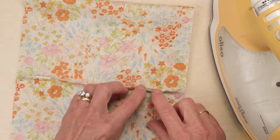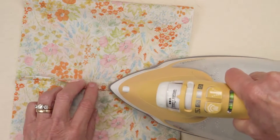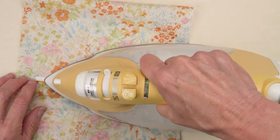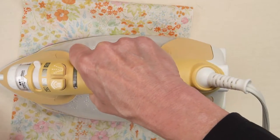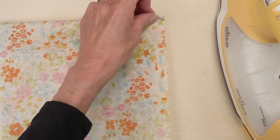Next press the seam allowance open on both the inside and the outside of the bag. Find the center of the side that's opposite the seam.